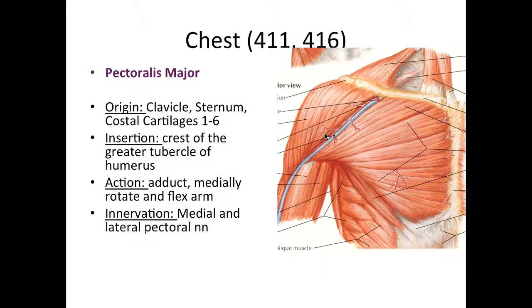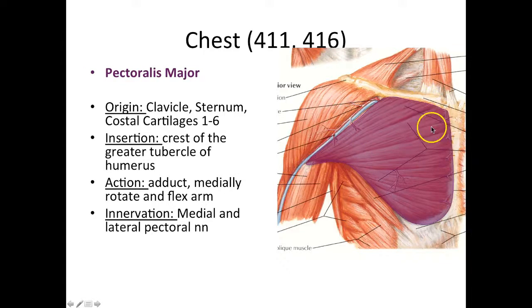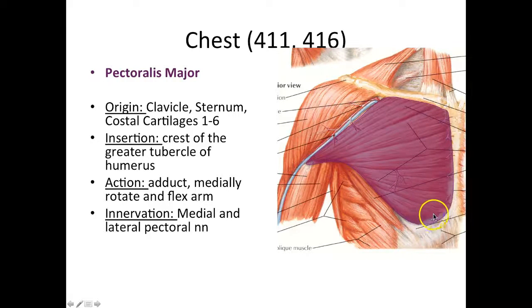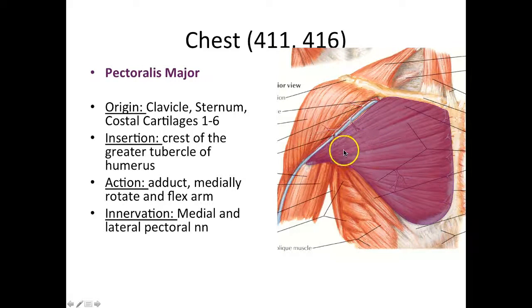First up is the pectoralis major muscle. This is originating from the clavicle, your sternum, and costal cartilages one through six. The insertion is at the crest of the greater tubercle of the humerus. When these muscle fibers contract, it is going to adduct, medially rotate, and flex the arm.